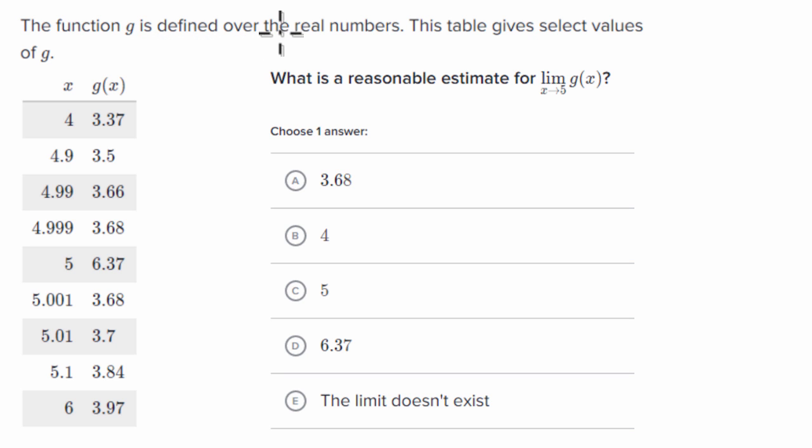The function g is defined over the real numbers. This table gives select values of g. What is a reasonable estimate for the limit as x approaches five of g of x?